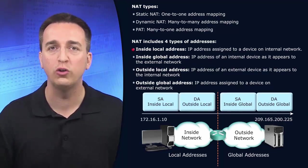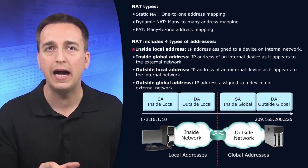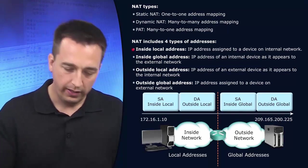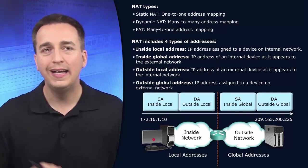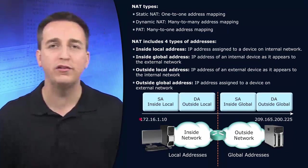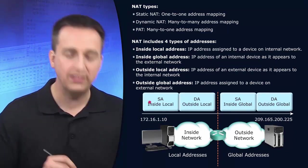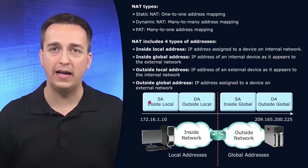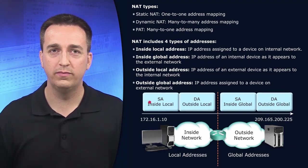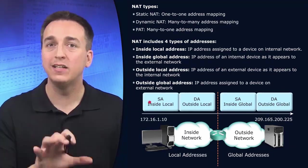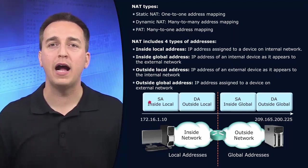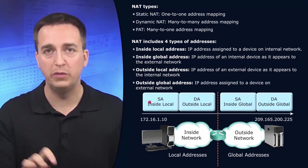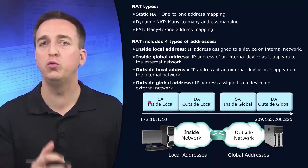Let's start off with the inside local address. It is the IP address assigned to a device on the internal network. Here's a device on our internal network whose IP address is 172.16.1.10. That's the inside local address — that is the source address of the packet. Now, is this always a private IP address? The majority of the time it will be.